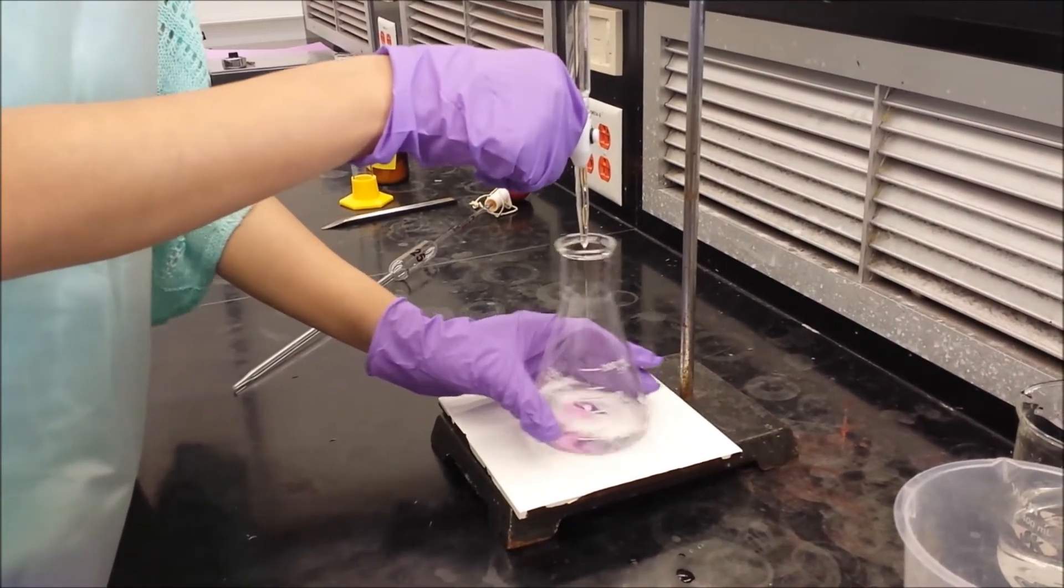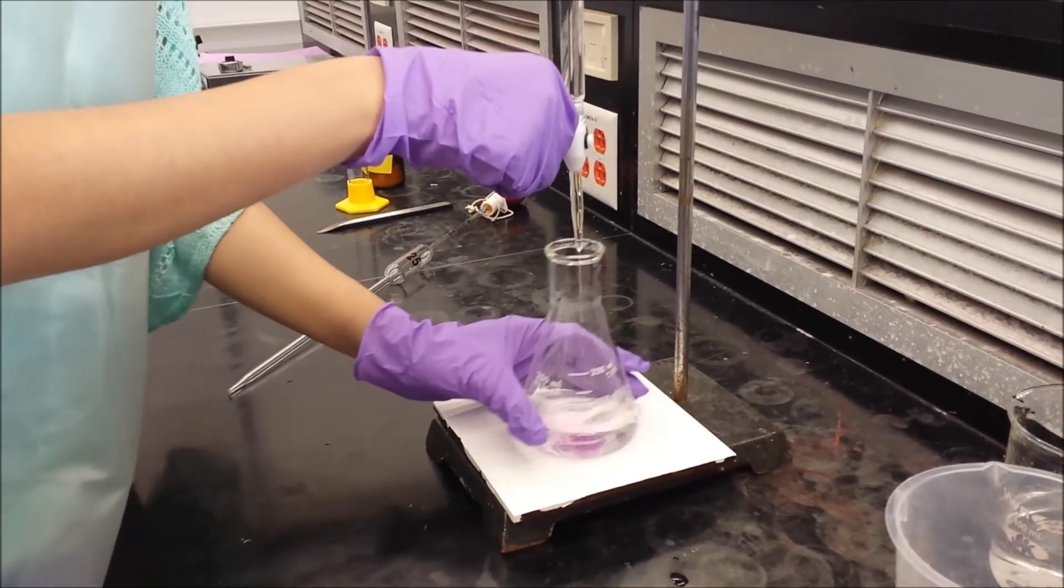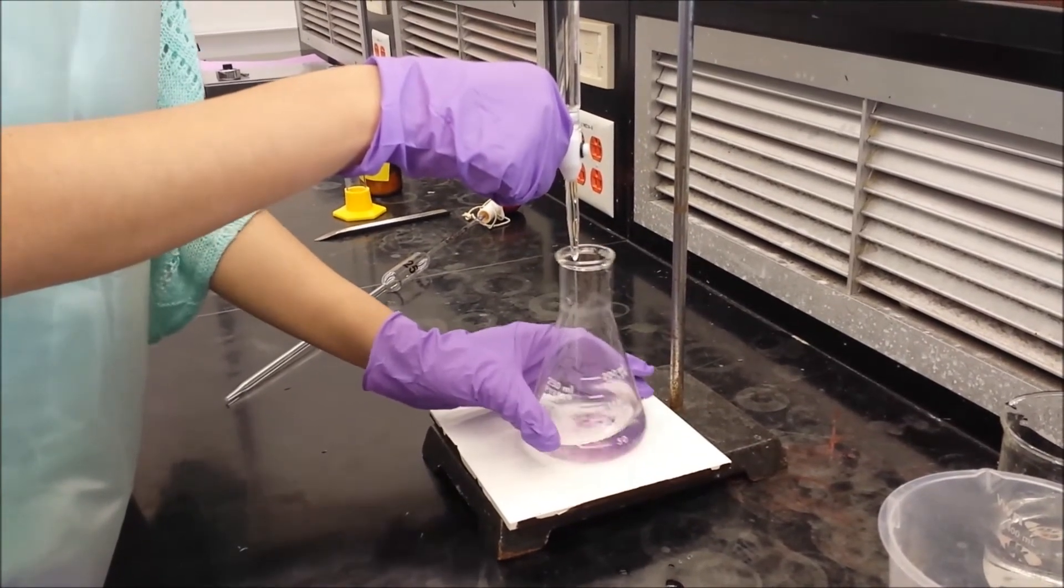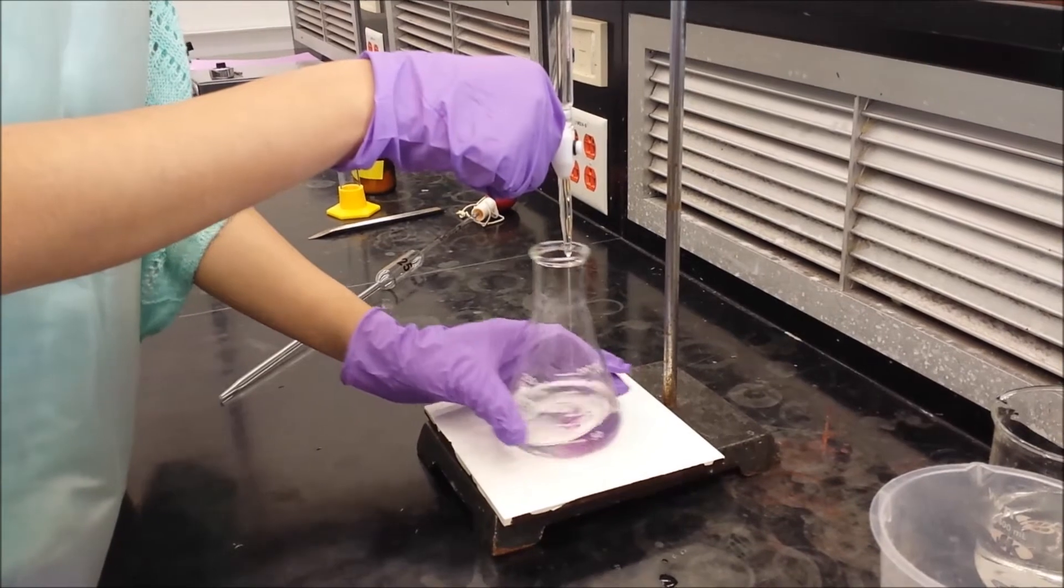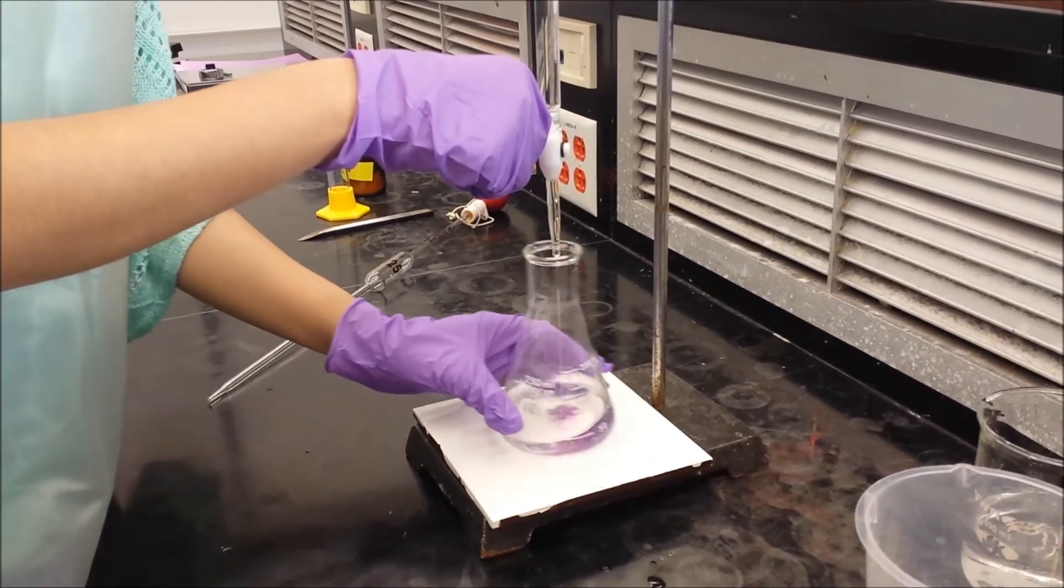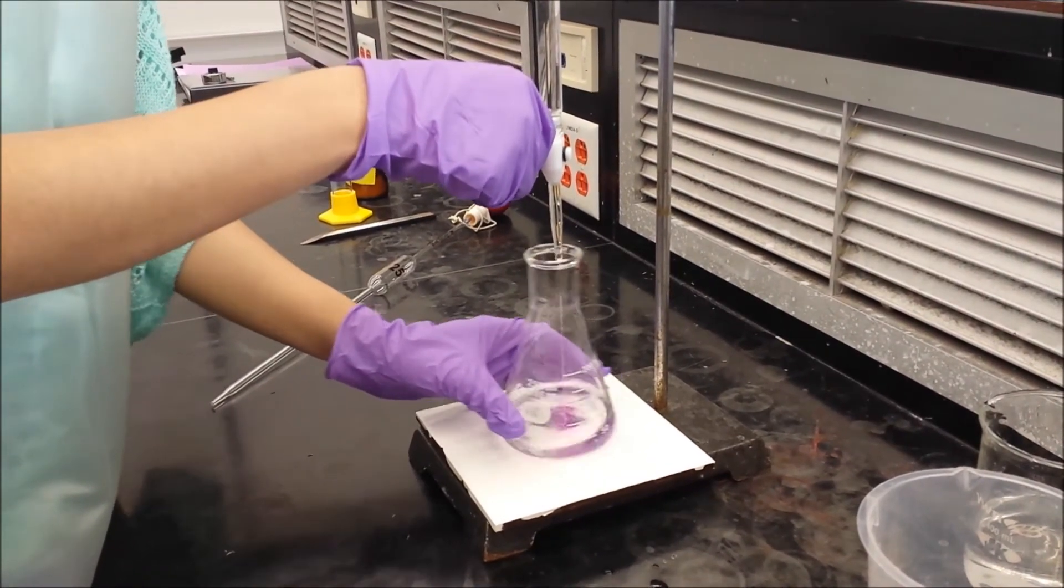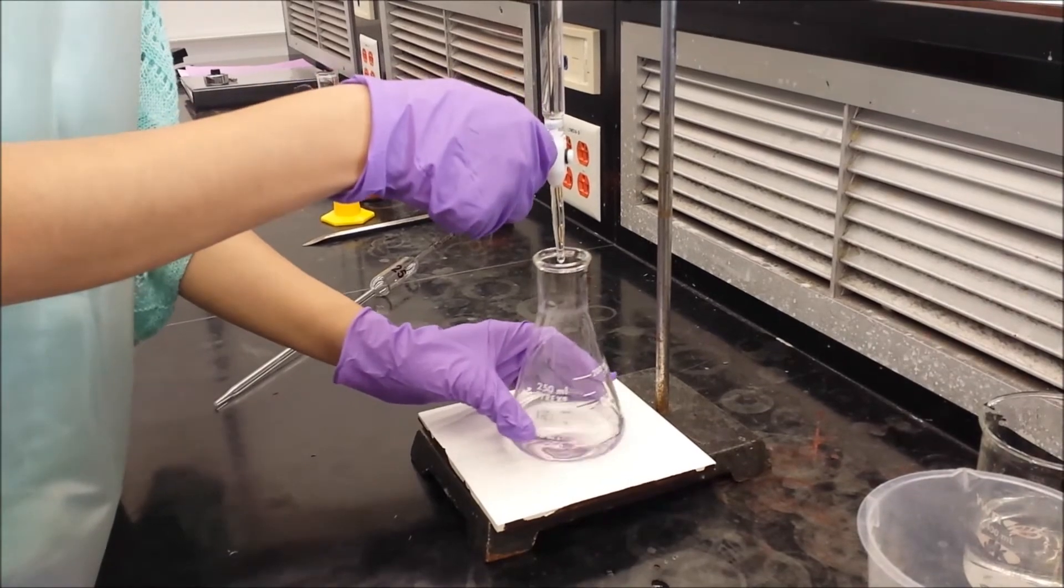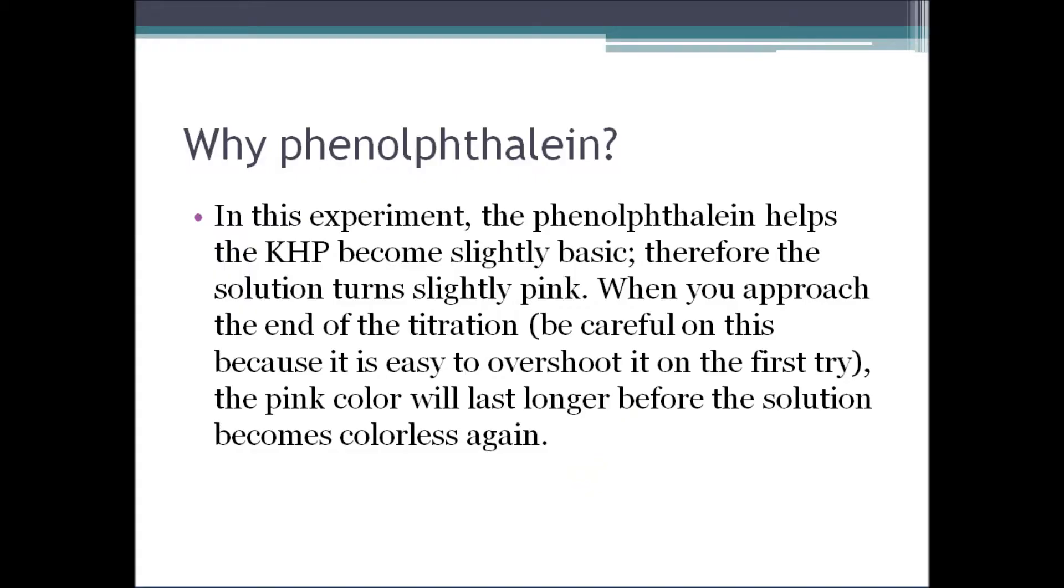As the titration continues, each drop should leave a magenta-pink residue in the flask that should go away when swirling. It is because the phenolphthalein is an indicator, it shows the change in color of the liquid based on its pH level. In this experiment, the phenolphthalein helps the KHP become slightly basic. Therefore, the solution turns slightly pink. When you approach the end of titration, the pink color will last longer before the solution becomes colorless again.